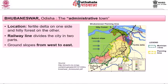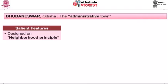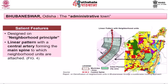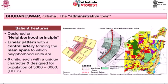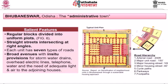The planning concept used for Bhubaneswar was the neighborhood principle. As shown in the drawing, it was planned in a linear fashion, with a linear pattern with a central artery forming the main spine and all neighborhood units attached to it. There were six units, each with a unique character, designed for a population of five thousand to six thousand.